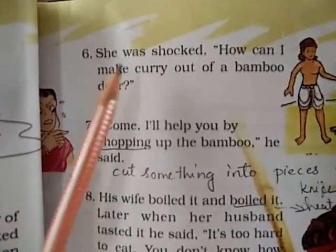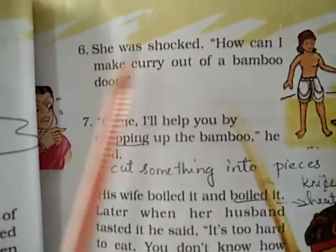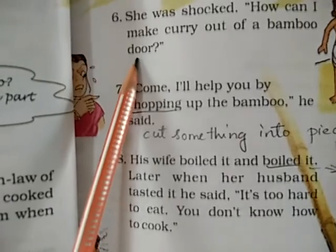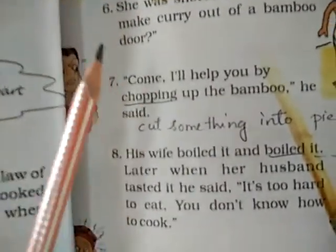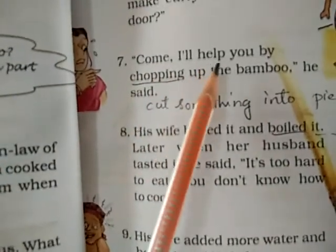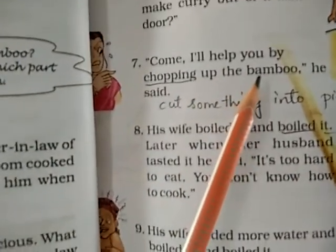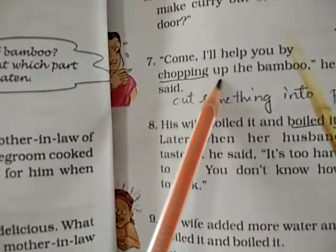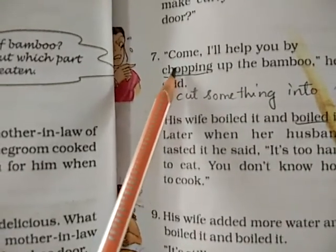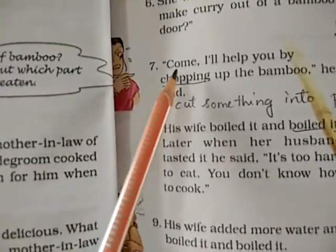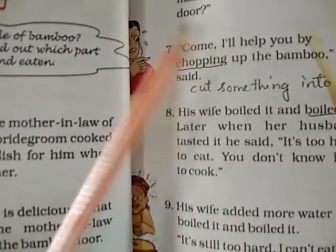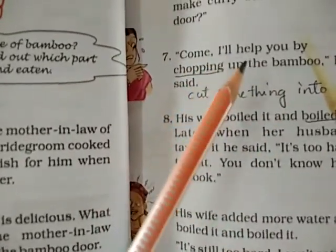Number six: She was shocked. How can I make curry out of a bamboo door? Number seven: He said, 'Come, I will help you by chopping up the bamboo.' Chopping means cutting something into pieces with a knife. The bamboo door was very hard — we should cut it, remove some skin, cut the pieces. He said, 'I will help you to cut.'